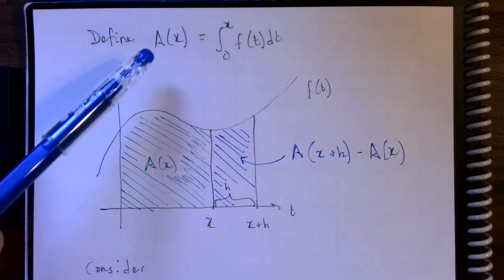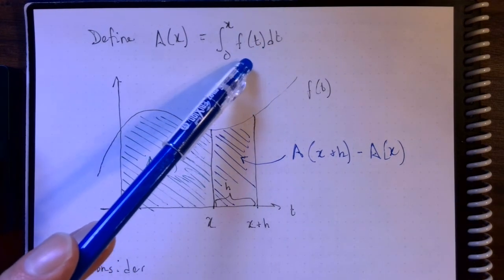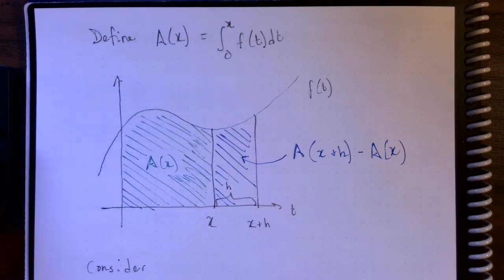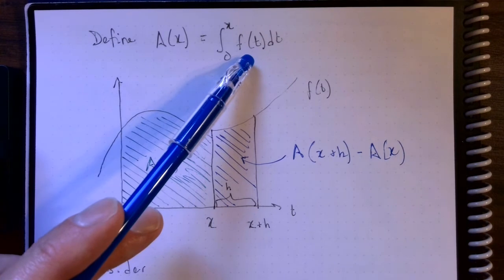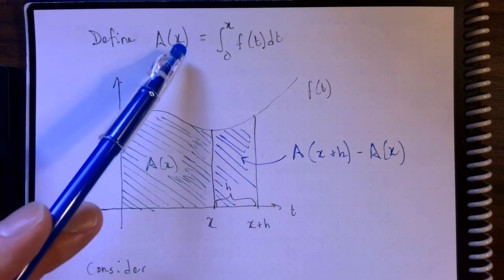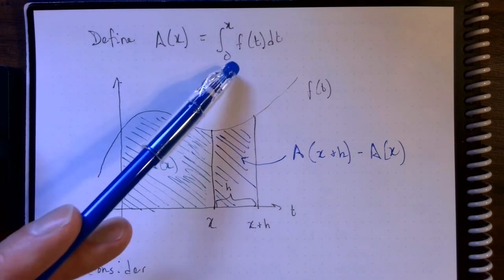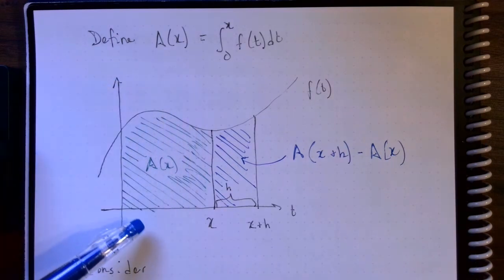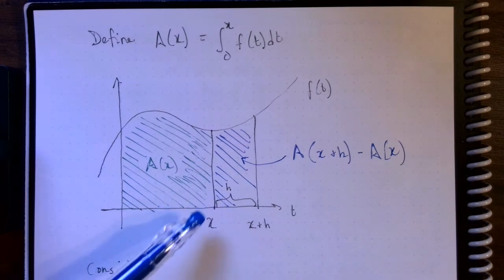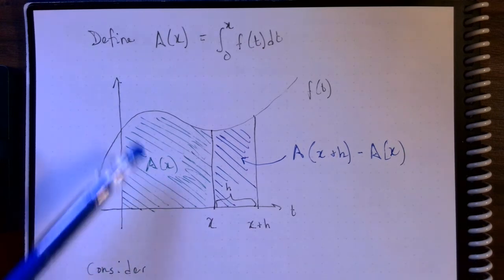We are going to define a function a(x) as the definite integral of another function f from 0 to x. This is a perfectly good way to define a function. Given f, we simply take our input value x, put it as the upper limit on our integral, find the value of that definite integral, and that's the output for the function a — we're just using a for area. If t equals x, this region represents a(x), the area under the curve from 0 to x.